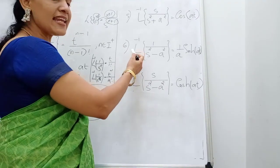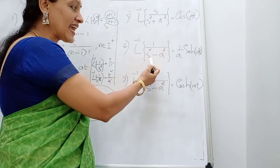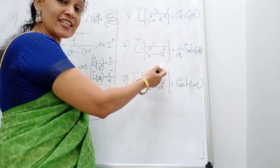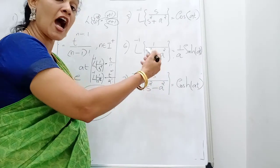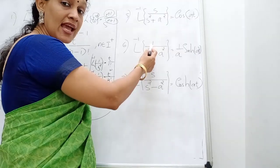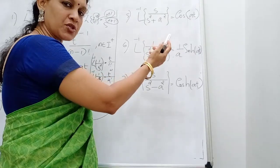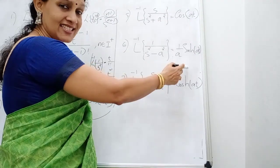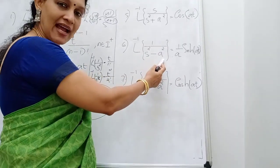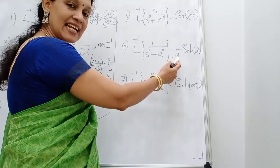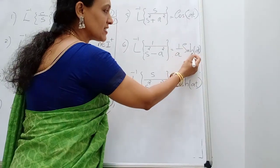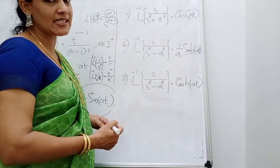Next, L inverse of 1/(s²-a²). If minus is in the denominator, it corresponds to a hyperbolic function. Since the numerator is 1, we get the hyperbolic sine. So L inverse of 1/(s²-a²) equals (1/a) sinh(at), where sinh is the hyperbolic sine function.